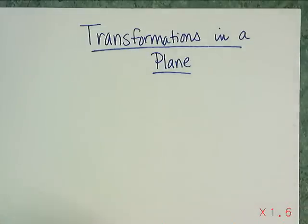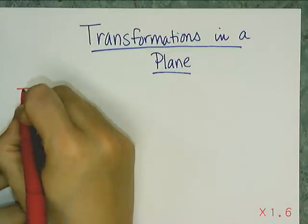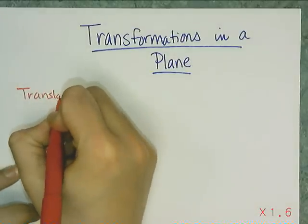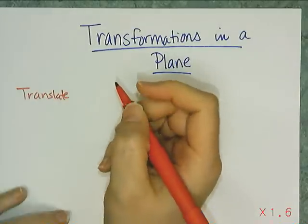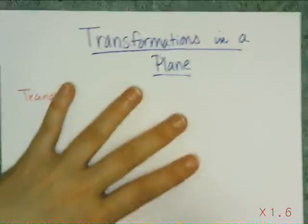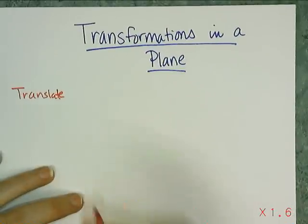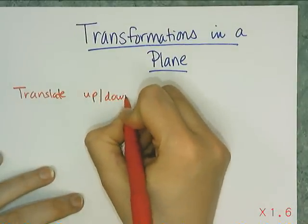So let's first look at the most basic one, the easiest one to see, and that is to translate something, which means to move, to shift is to translate, to just move it around in a plane. I'm translating my piece of paper. And let's go with up and down, because that's the easiest one.